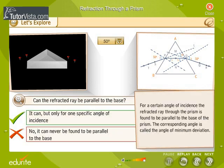For a certain angle of incidence, the refracted ray through the prism is found to be parallel to the base of the prism. The corresponding angle is called the angle of minimum deviation.